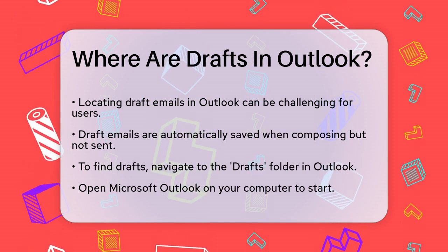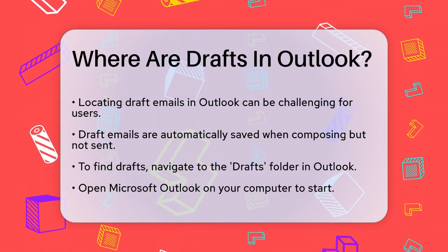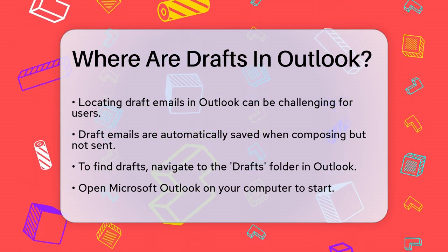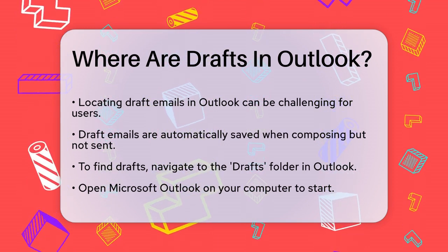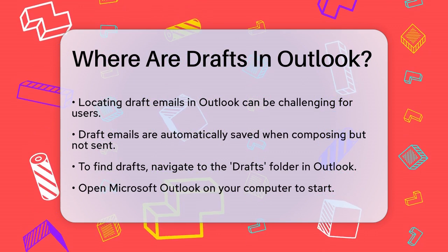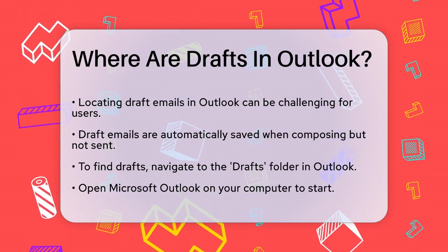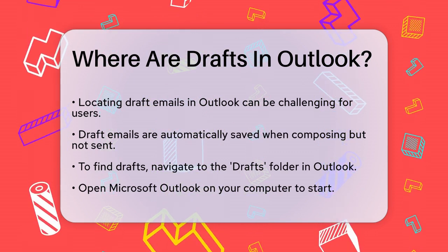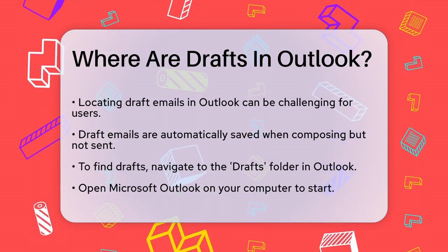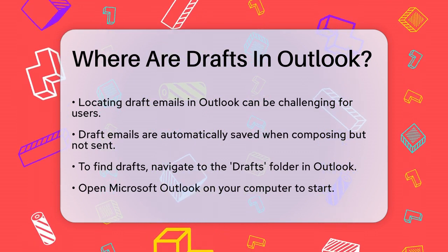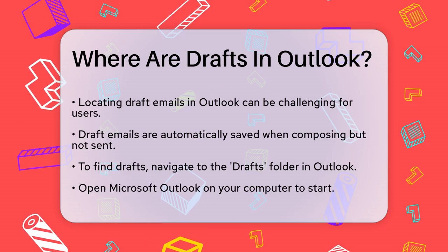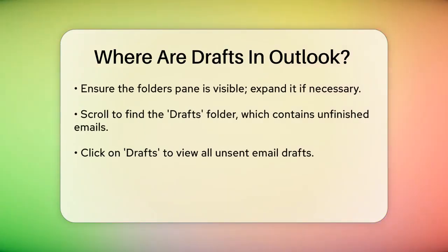To find these drafts, you need to navigate to the Drafts folder. Here's how you can do it. First, open Microsoft Outlook on your computer. On the left side of the Outlook window, you'll see a list of folders. If you don't see this list, you might need to expand the folders pane by clicking on the arrow or pane divider.